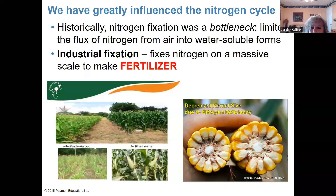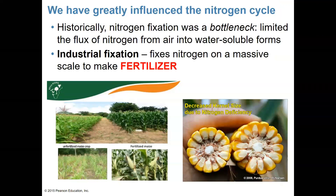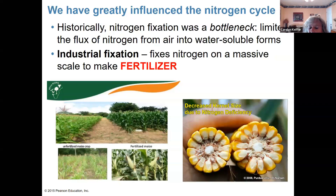They would stick fish heads and other parts of the fish in at the same time they would plant the seed. That fish would break down into fertilizers — there's a lot of nitrogen in animals — and then the corn would grow really well. You can see in this picture the top photo on the left is typical corn. The side of the field that did not get any fertilizer looks much worse by comparison.